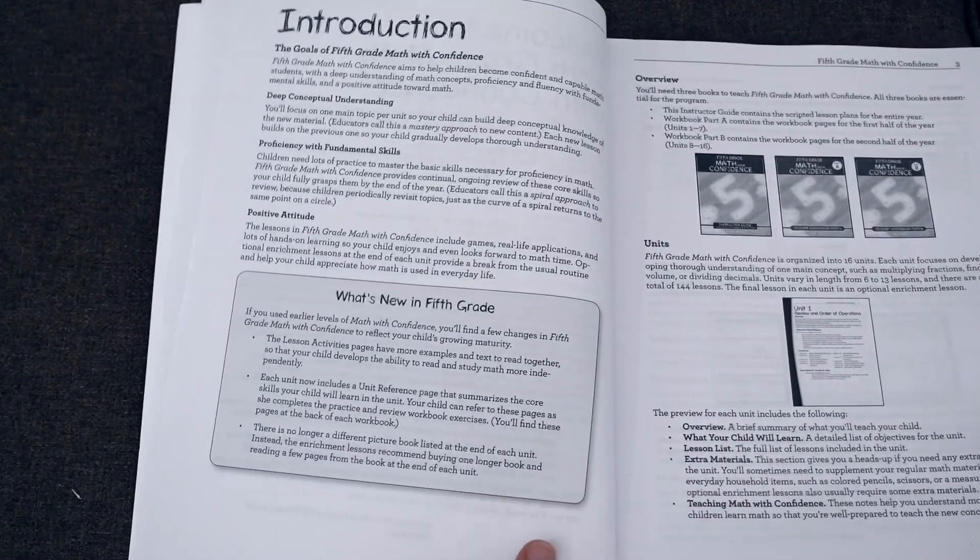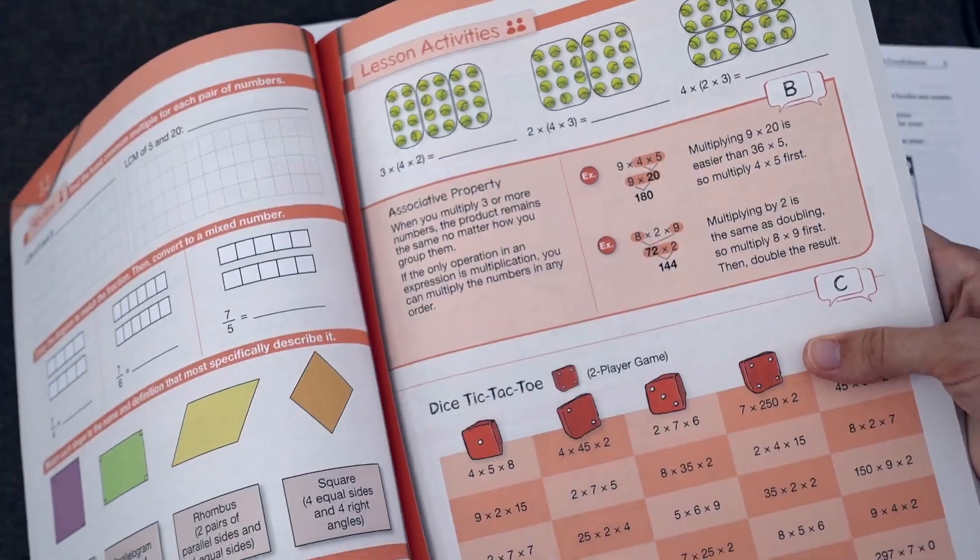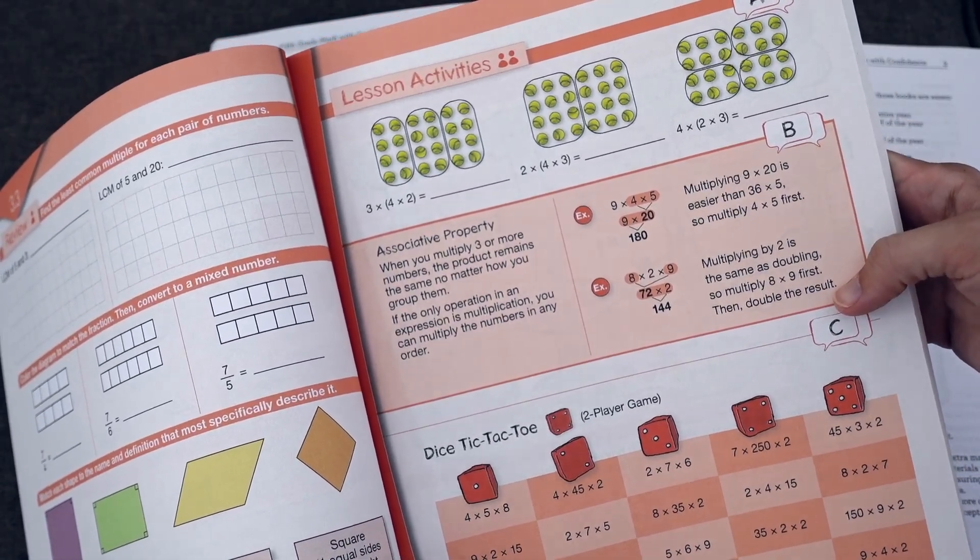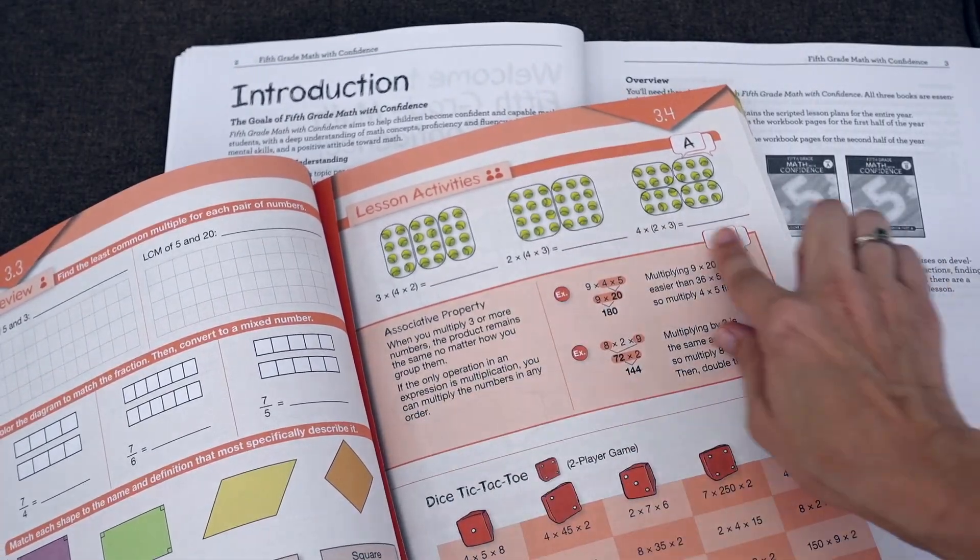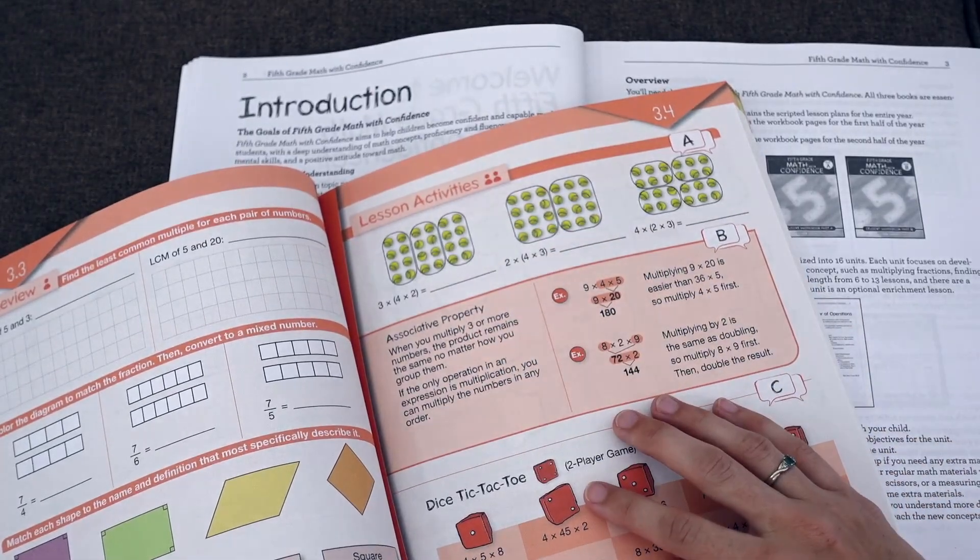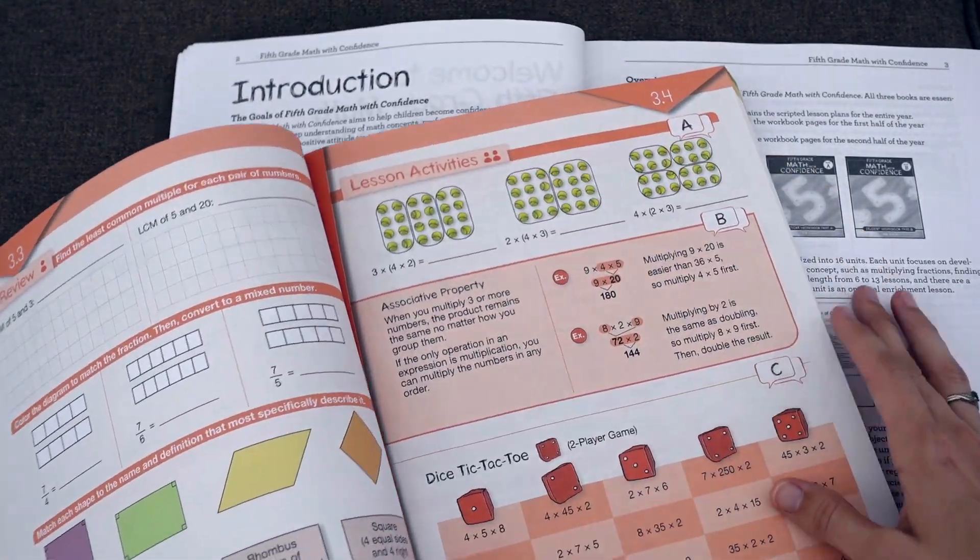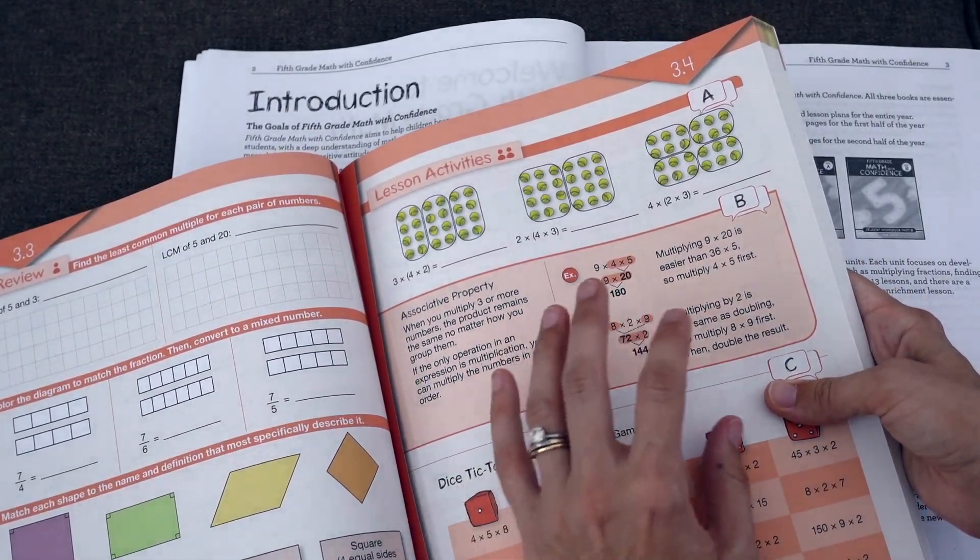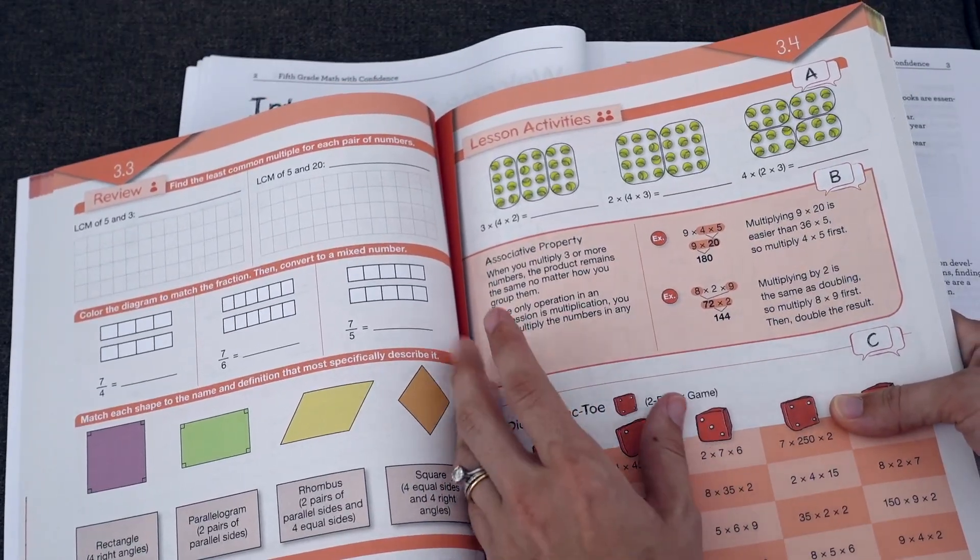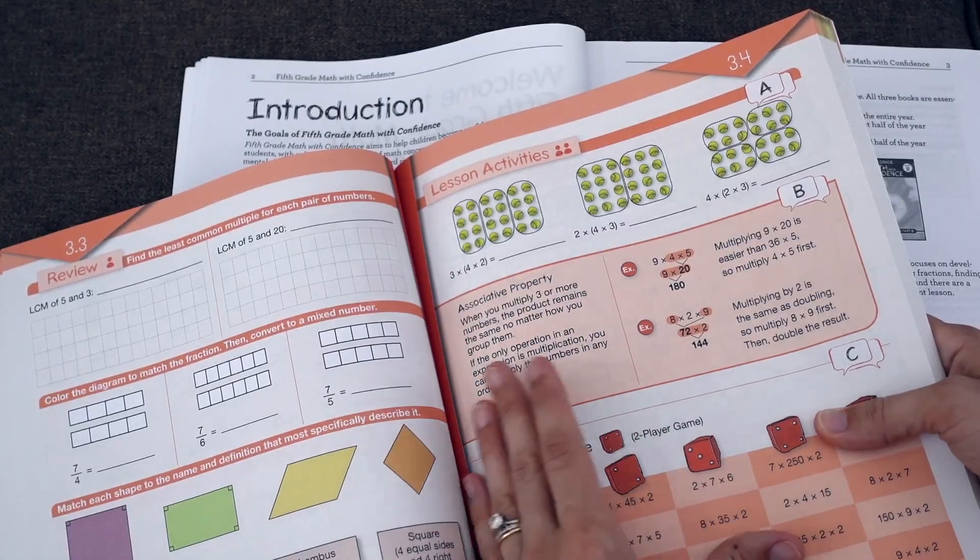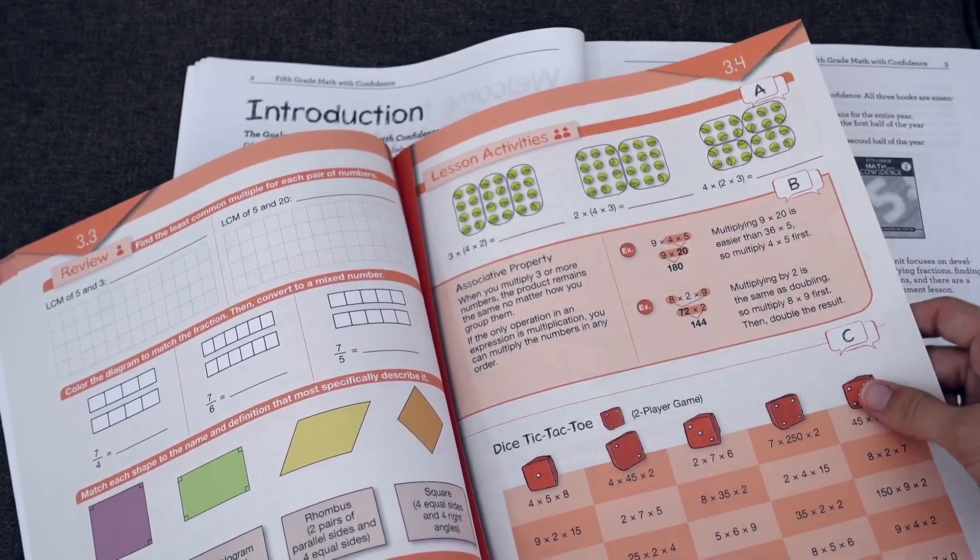There are going to be a few things that are different in 5th grade. One of the things that's different is that in the student book, there is more written information. So like you'll see right here in the B section of this page, you have a written definition of what's the associative property and you'll have examples of that. So we have some of that teaching written down in the book. Now this is not at all intended to be the full lesson or the full explanation. The teacher is still needed. But this is a way to transition the child into learning how to do more of their own math reading.